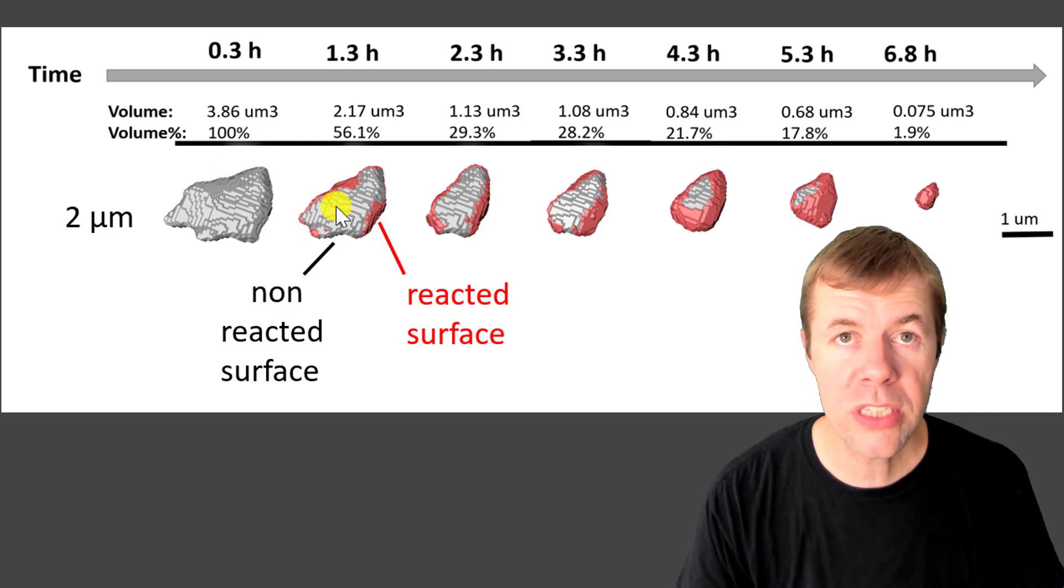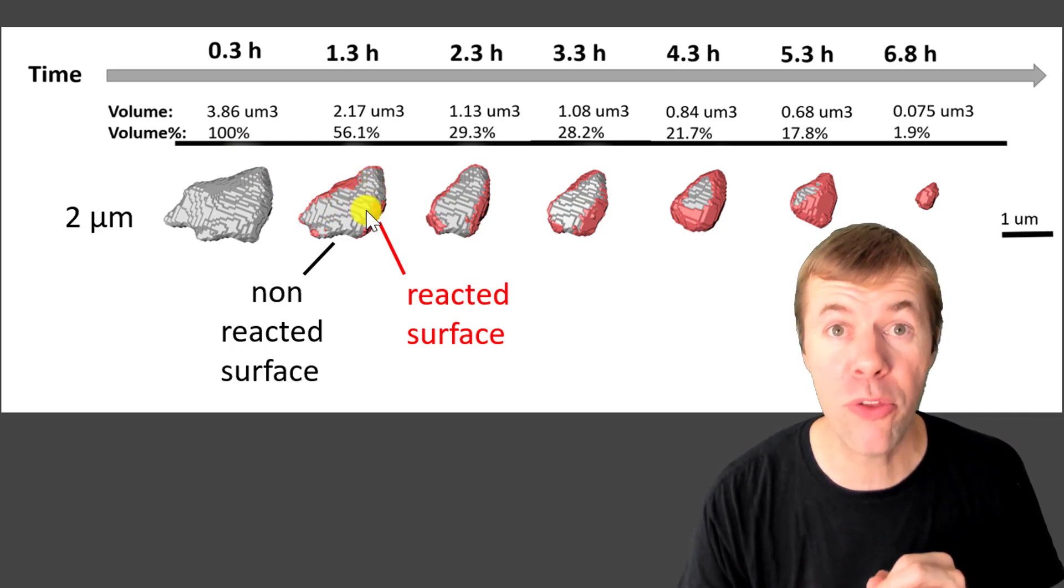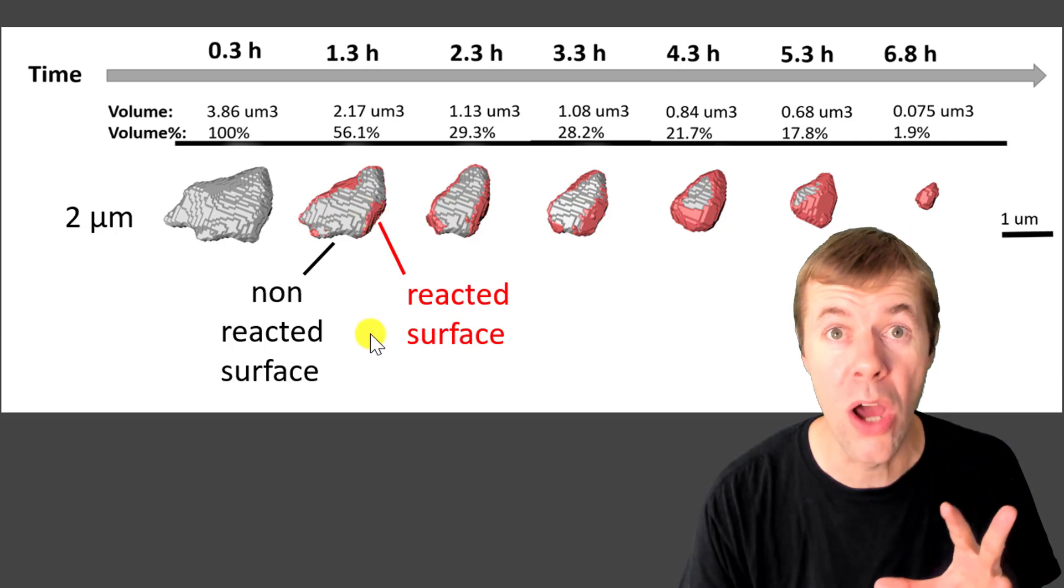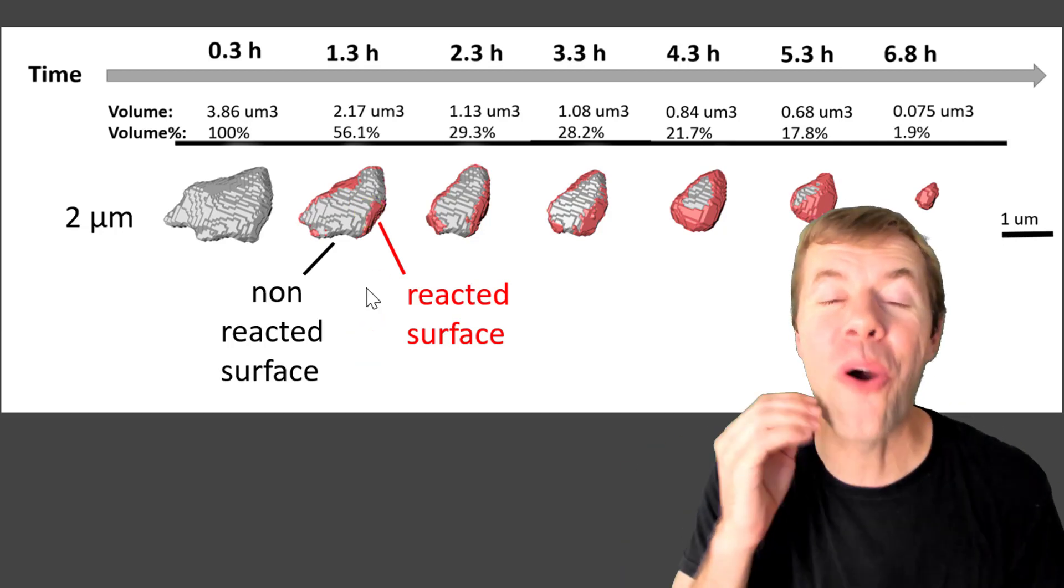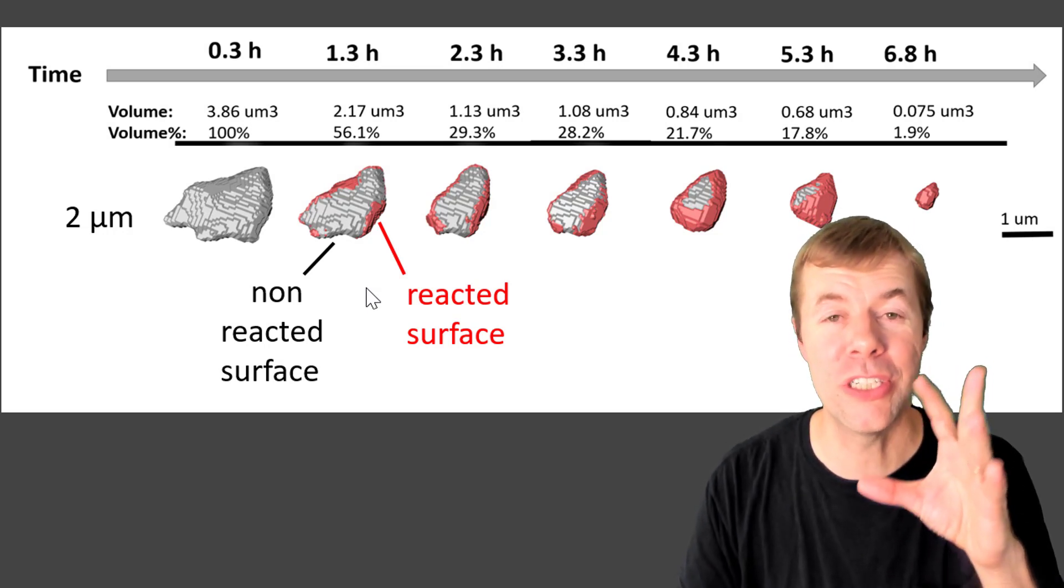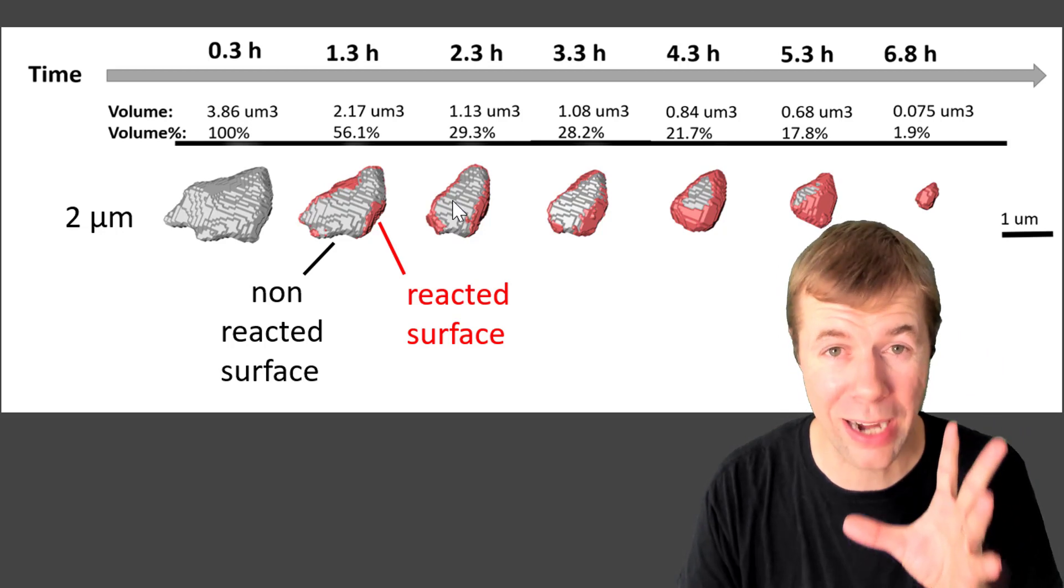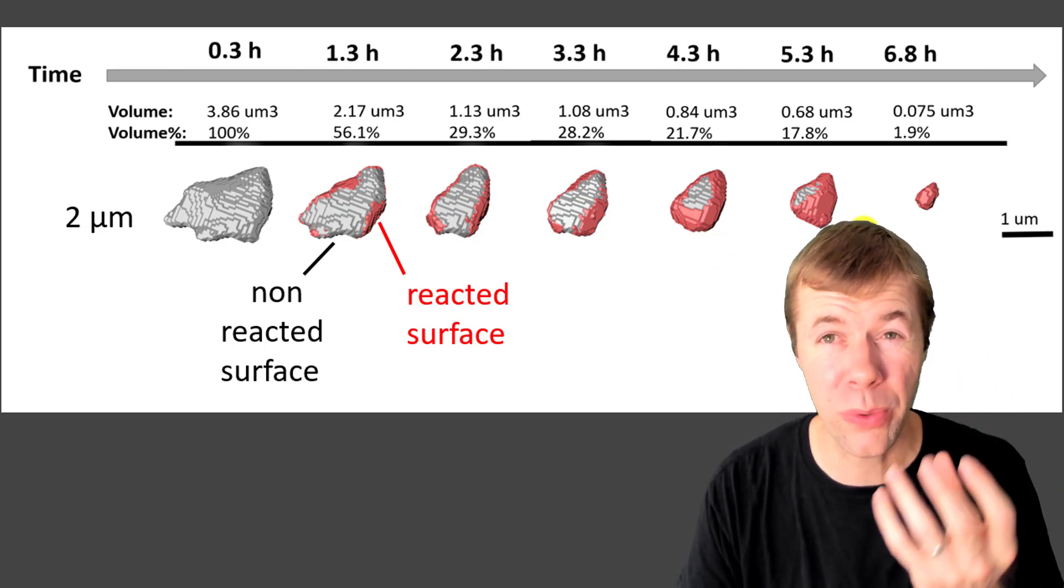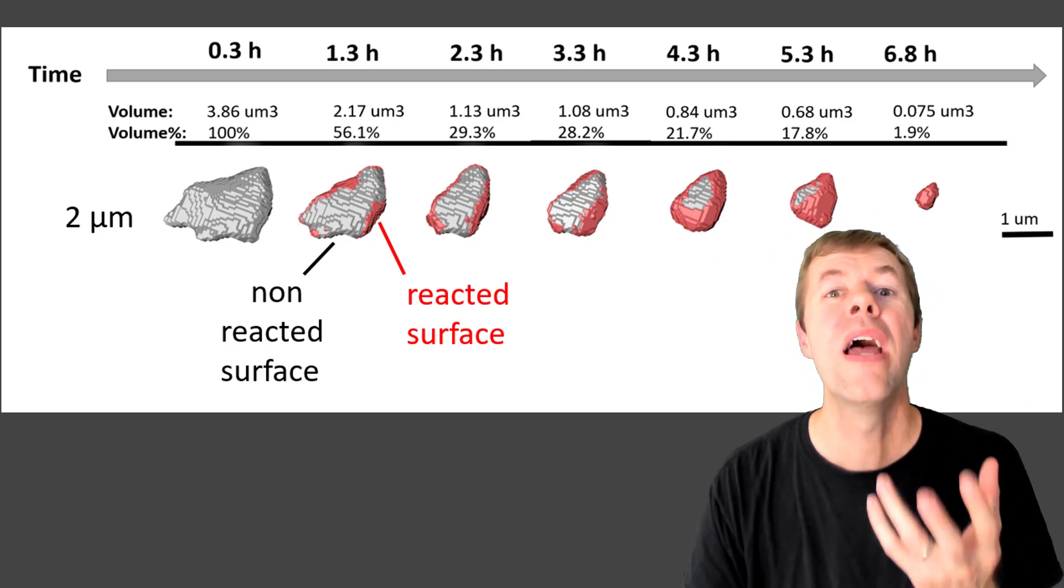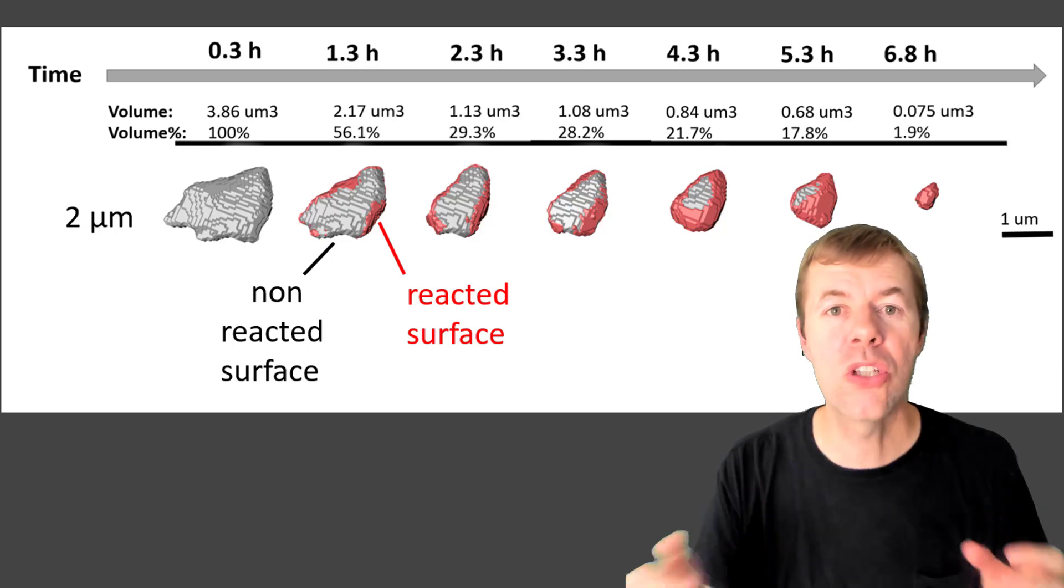Also, the regions that are gray are where they have not reacted. And the regions that are pink or red are a reacted surface. And as you can see over time, some of these regions react a lot and some don't react at all. And over time again, it reacts and goes away. And when I saw this, I said what's going on?